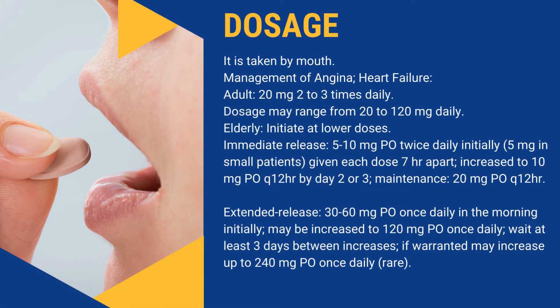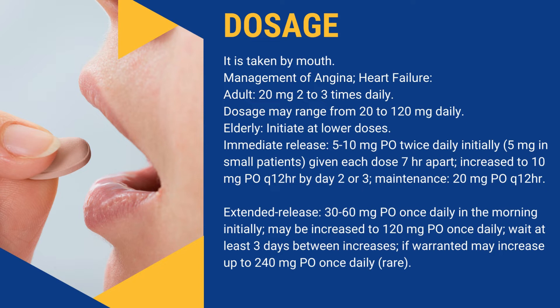Dosage — it is taken by mouth. Management of angina and heart failure: Adult dose is 20 mg 2–3 times daily; dosage may range from 20–120 mg daily. For elderly patients, initiate at lower doses. Immediate release: 5–10 mg PO twice daily initially (5 mg in small patients), with each dose given 7 hours apart. Increased to 10 mg PO Q12H by day 2 or 3.